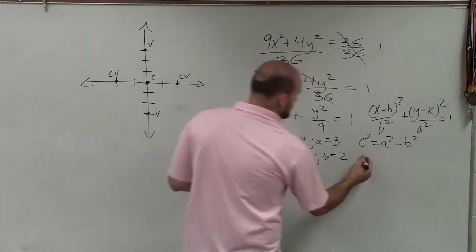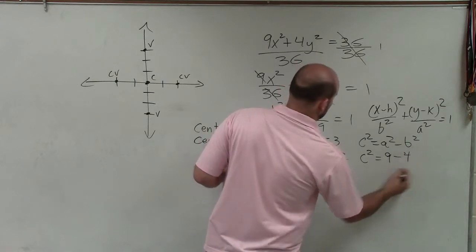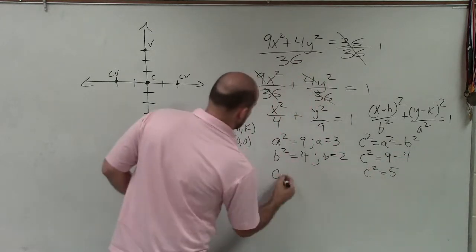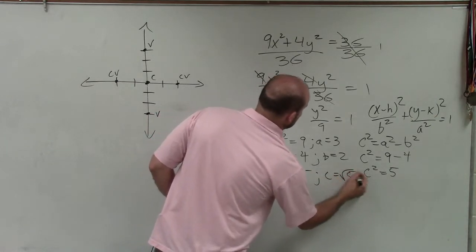And I know a² and b². So c² equals 9 minus 4. c² equals 5. So c² equals 5. That means c equals the square root of 5.